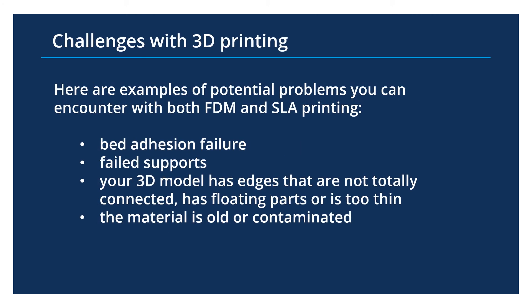Here are a few problems you can have with 3D printing. If the first few layers don't stick to the build plate, your entire print will fail — it's always a good idea to stick around while the printer is printing the first few layers. If your supports aren't thick enough or not in the right spot, your overhangs will fail. If your 3D model has edges that are not totally connected or not manifold, floating parts, or walls that are too thin, the print will fail. If the material you're printing with is old or contaminated, it could affect the outcome of your print.